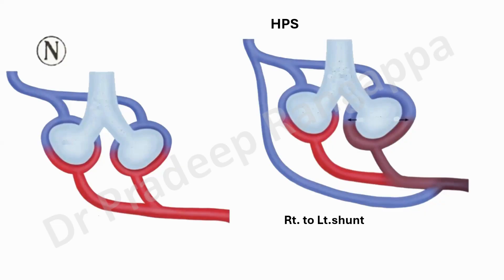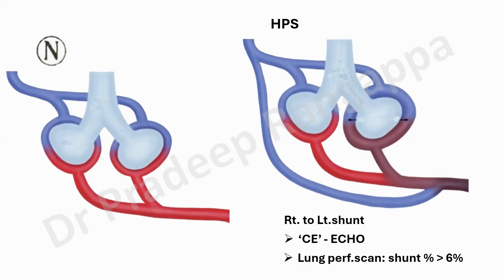If you keep this picture in your mind, you'll be able to reproduce it better in exams. The way to diagnose this is by doing contrast-enhanced echocardiogram — we published a video tutorial on the agitated saline test in the Journal of Acute Care. Alternatively, you can do a lung perfusion scan, and in that scan, the shunt fraction has to be more than 6% to call it hepatopulmonary syndrome.